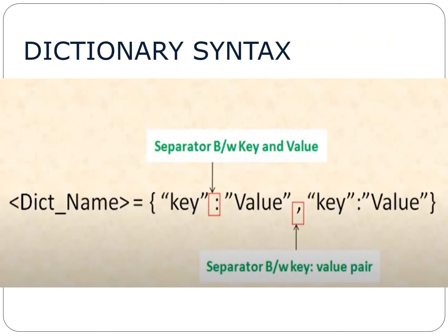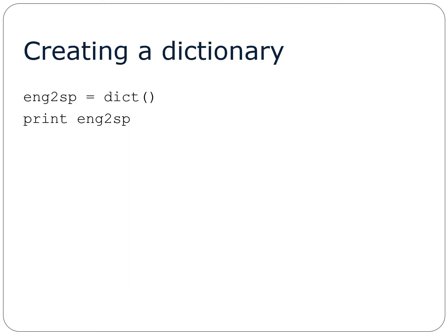The dictionary syntax is: the name of the dictionary — which should be unique — followed by equal to, then curly brackets, then the key (if it is a string, enclose in single or double quotes), then a colon, then the value (if a string, enclose in quotes), then a comma, then the next key and value, and so on. We can also create an empty dictionary: for example, eng2sp = dict() creates an empty dictionary with no key-value pairs, where we can input values at the time of entry.